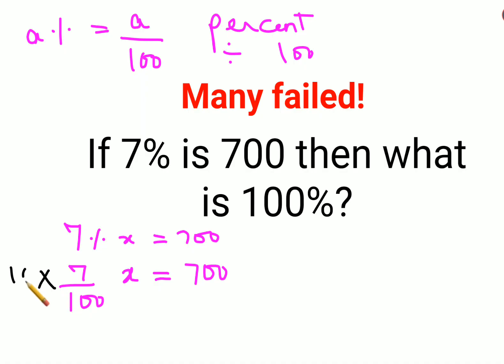Now in order to find the value of x, you will multiply both sides by 100 and similarly divide both sides by 7. So this and this will cancel, this and this will also cancel. From here, I've got the value of x as 10,000, because 100 times 100 is 10,000.